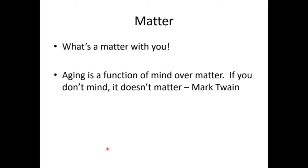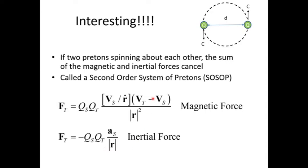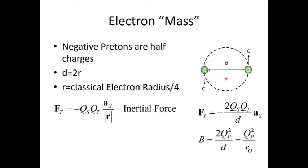Now let's talk about matter. If we put two light pretons in a system where they orbit about a central point at the speed of light, both the magnetic force and the inertial forces cancel and this system becomes stable. We call this a second order system of pretons — second order because velocity is the first order derivative of position and acceleration is the second order derivative of position. A second order system of pretons, or SOSOP for short. If we try to accelerate this system — if you try to push it with your fingertip — by accelerating one preton, that preton is going to have a reactionary force against your finger, and likewise if you push the other one, it also gives a reactionary force.